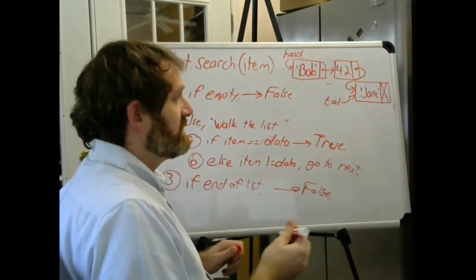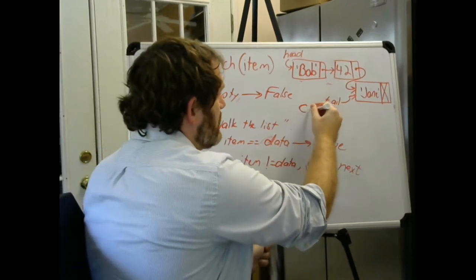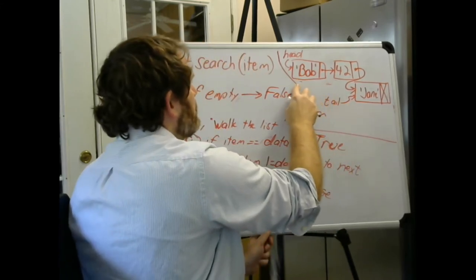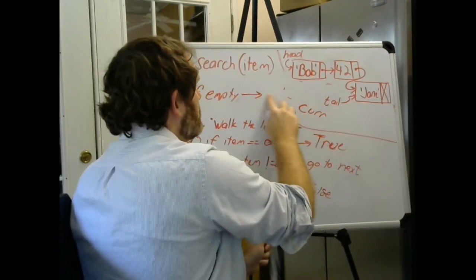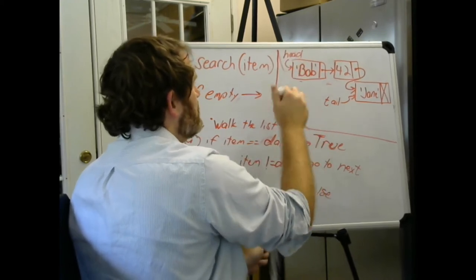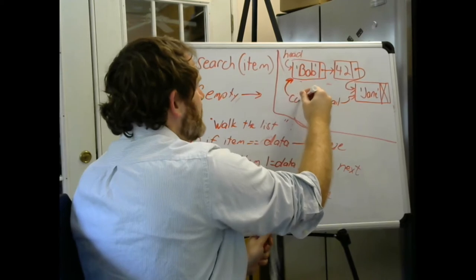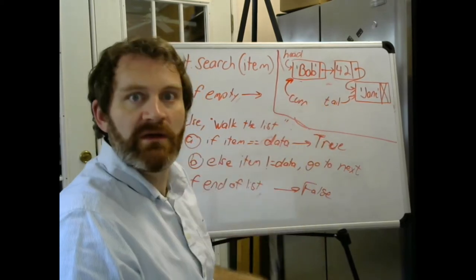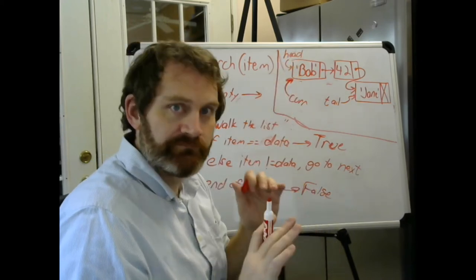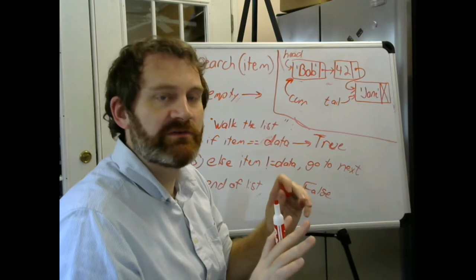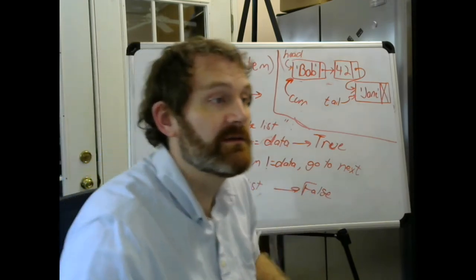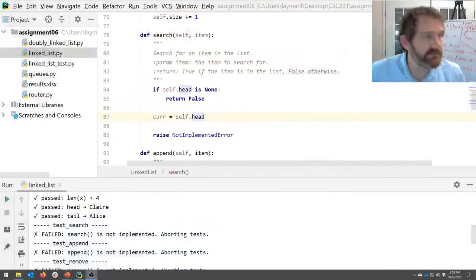So we're going to start at the head, self.head. After this line of code executes, current and self.head will be pointing to the same node. On our board, at this point cur and head are pointed to the same place. That's all we're saying. Make sure you kind of grasp that. All right, let's go back to the code.